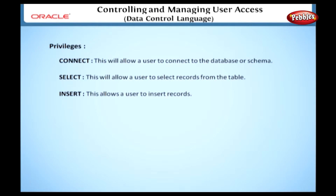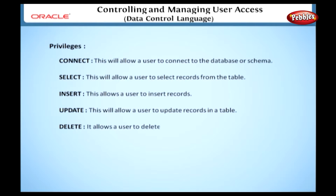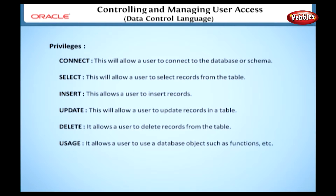Connect: This will allow a user to connect to the database or schema. Select: This will allow a user to select records from the table. Insert: This allows a user to insert records. Update: This will allow a user to update records in a table. Delete: This allows a user to delete records from the table. Usage: This allows a user to use database objects such as functions, etc. We can specify these things while giving permissions to the users. These DCL commands are auto-committed when they are executed.